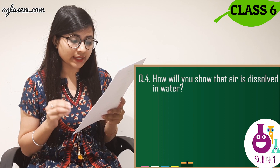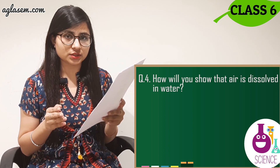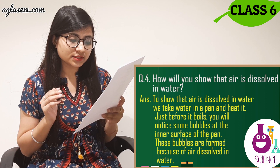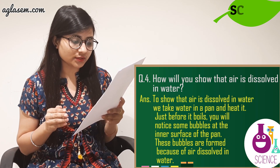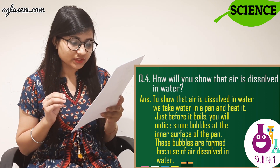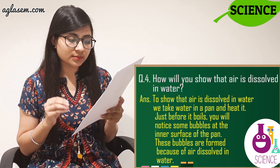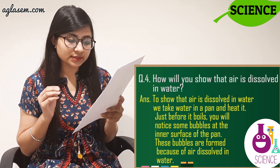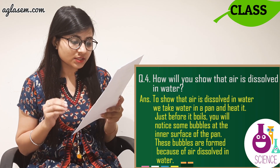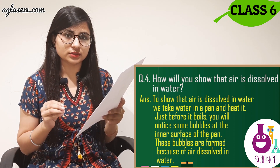Question number 4: How will you show that air is dissolved in water? The answer is: to show that air is dissolved in water, we take water in a pan and heat it. Just before it boils, you will notice some bubbles at the inner surface of the pan. These bubbles are formed because of air dissolved in water.